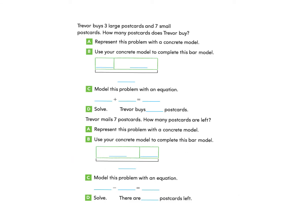We will start under Build Understanding. Trevor buys three large postcards and seven small postcards. How many postcards does Trevor buy? Let's take a look at part A. Represent this problem with a concrete model — a concrete model is something that we can touch. You may have some cubes to represent this problem. I'm going to draw to demonstrate the concrete model. Here I have three large postcards and seven cubes to represent the seven small postcards.